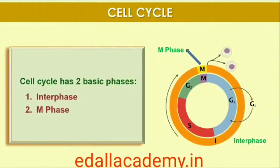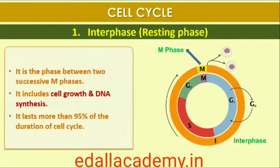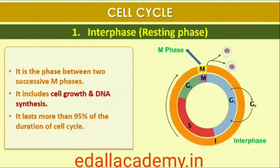The cell cycle is divided into two basic phases: Interphase and M-Phase (Mitosis Phase). The M-Phase represents the phase when the actual cell division or mitosis occurs, and the interphase represents the phase between two successive M-Phases. In the 24-hour average duration of the cell cycle of a human cell, cell division proper lasts for only about an hour, while the interphase lasts more than 95% of the duration.